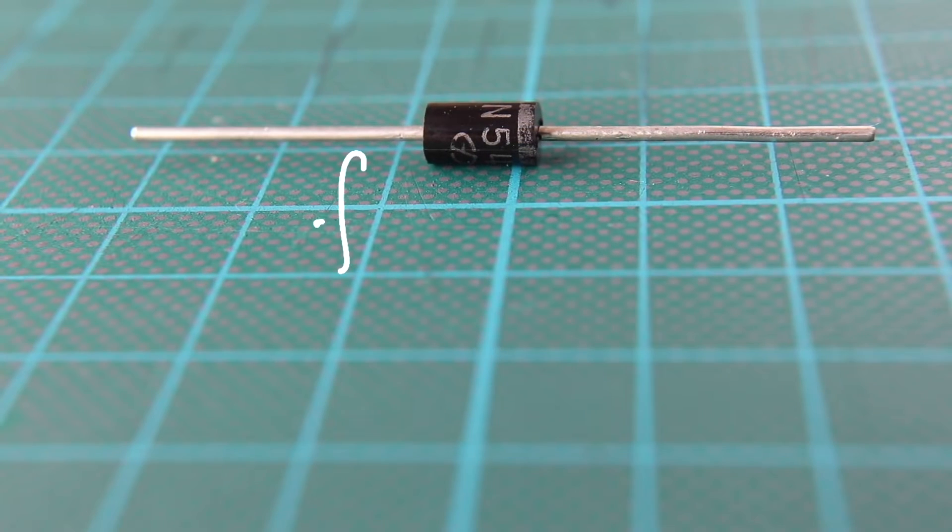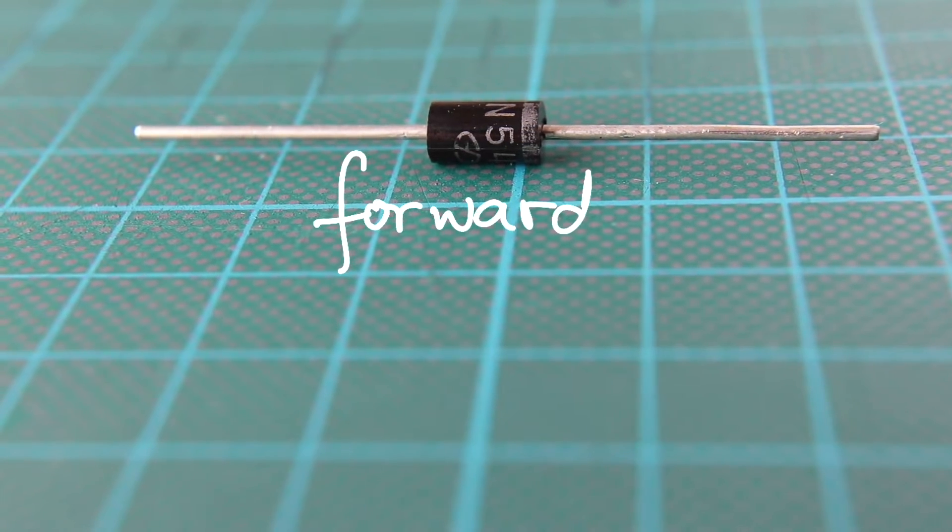This video demonstrates the function of a diode in a simple electric circuit. A diode is an electrical component that allows a current to flow through it in one direction, called the forward direction,